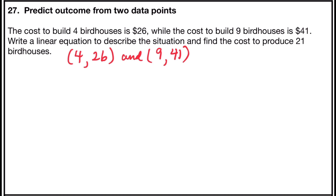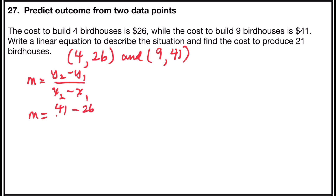With the two points (4, 26) and (9, 41), the first step is to find the slope. Slope = (y₂ − y₁) / (x₂ − x₁) = (41 − 26) / (9 − 4) = 15 / 5 = 3. So the slope of the linear equation is 3.